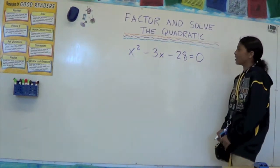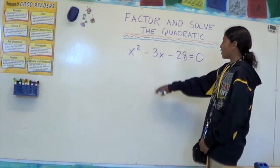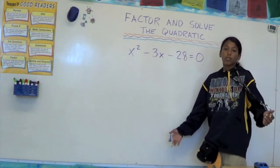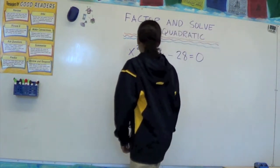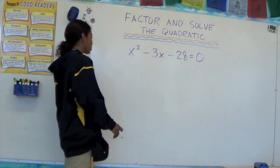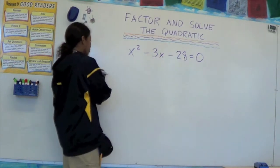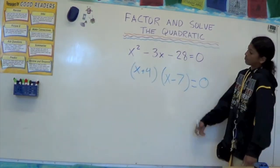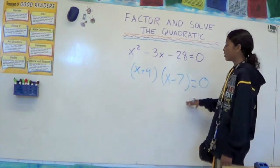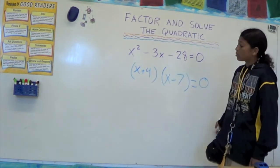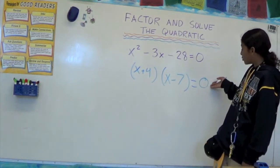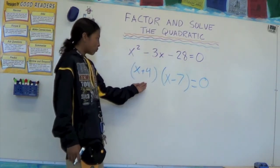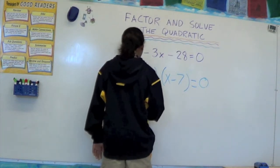Let's factor this quadratic right now. First of all, we've got to find something that adds to negative three but multiplies to negative twenty-eight. I think it's negative seven and positive four — that will equal negative three. So since we have factored, one of these parentheses has to equal zero, because once you multiply something has to equal zero. So those possibilities could be negative four or positive seven. And that is your answer.